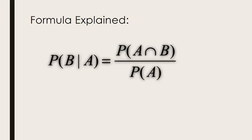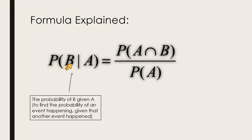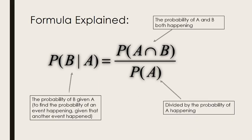This form is complicated but here's what it means. The probability of B given A — that is, the probability of B given that A has already happened. That's the conditional part; it's on the condition that A has already occurred. This is equal to the probability of A and B happening divided by the probability of A happening.